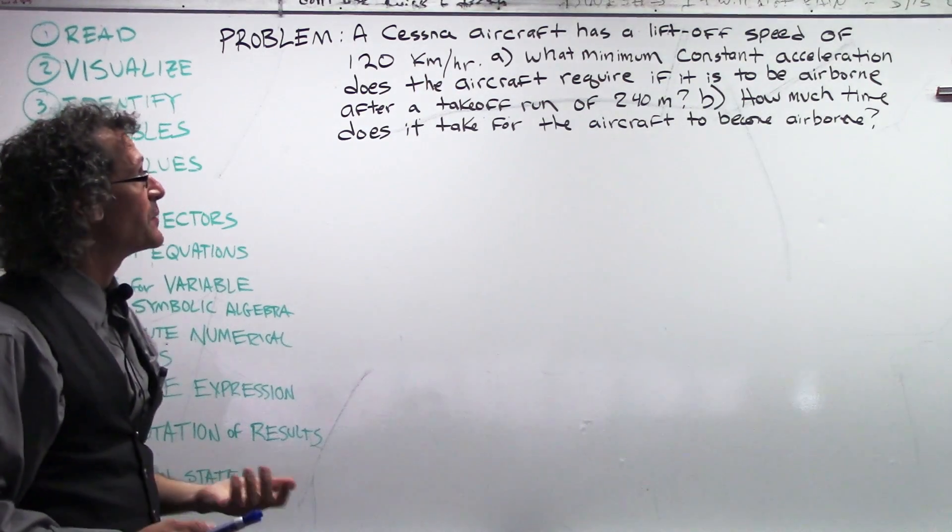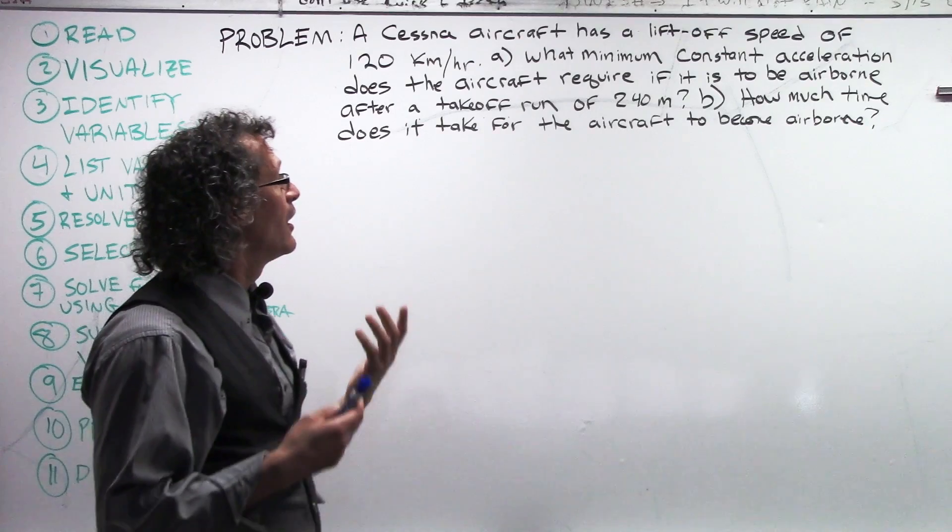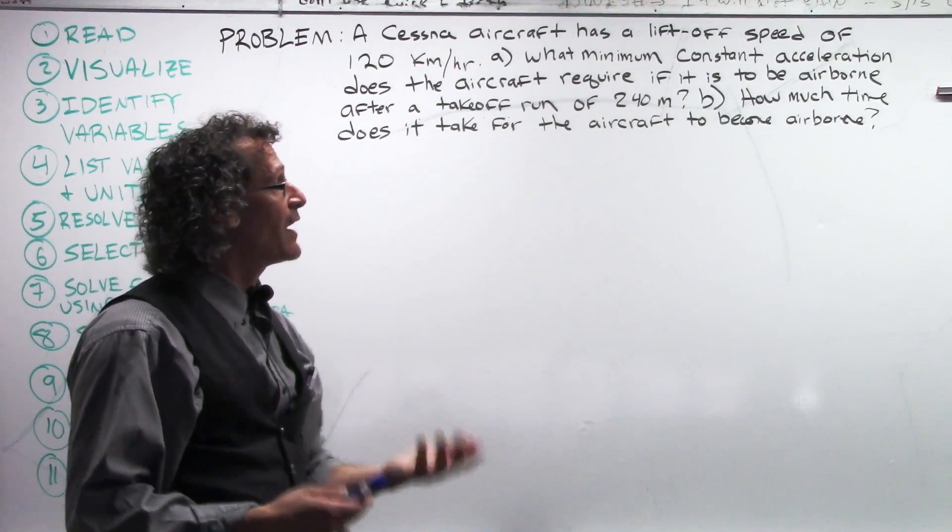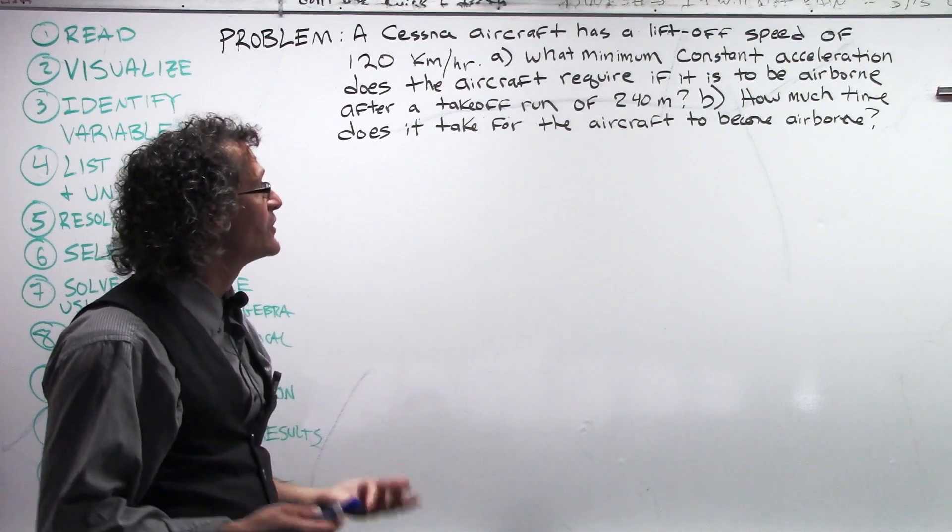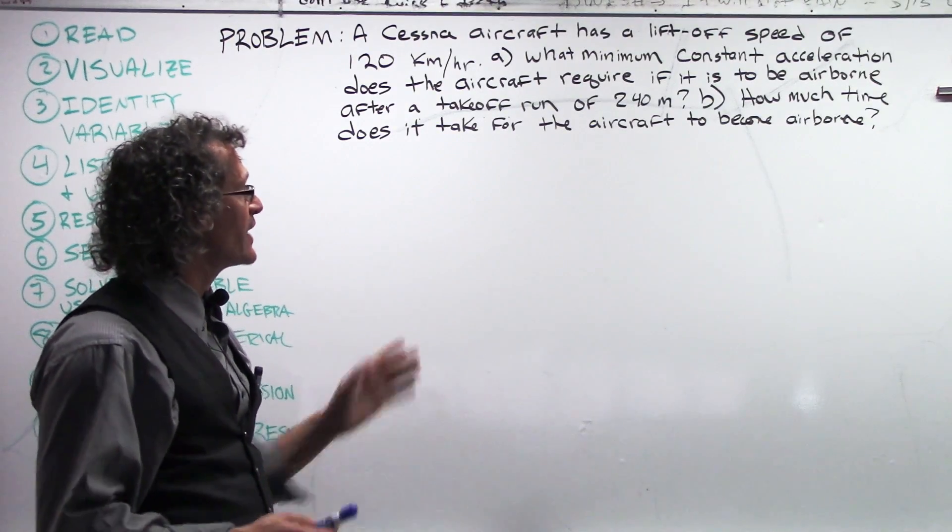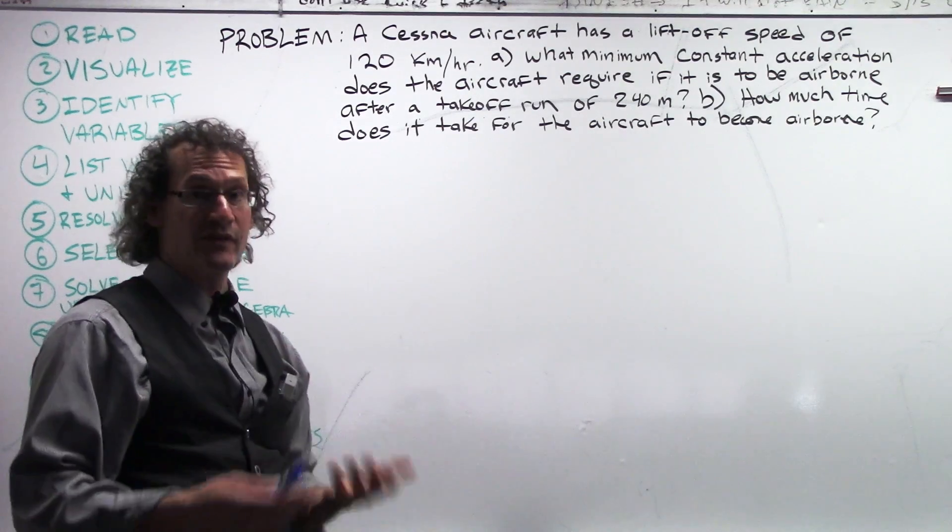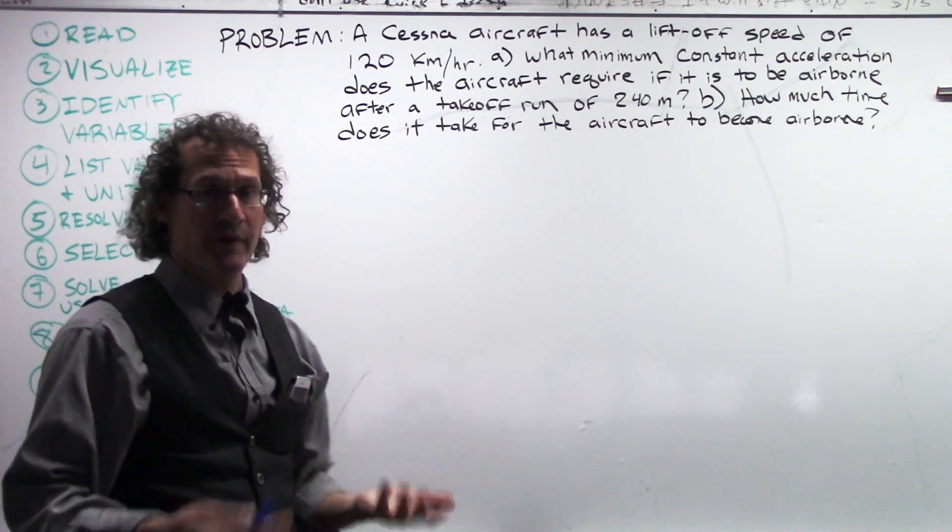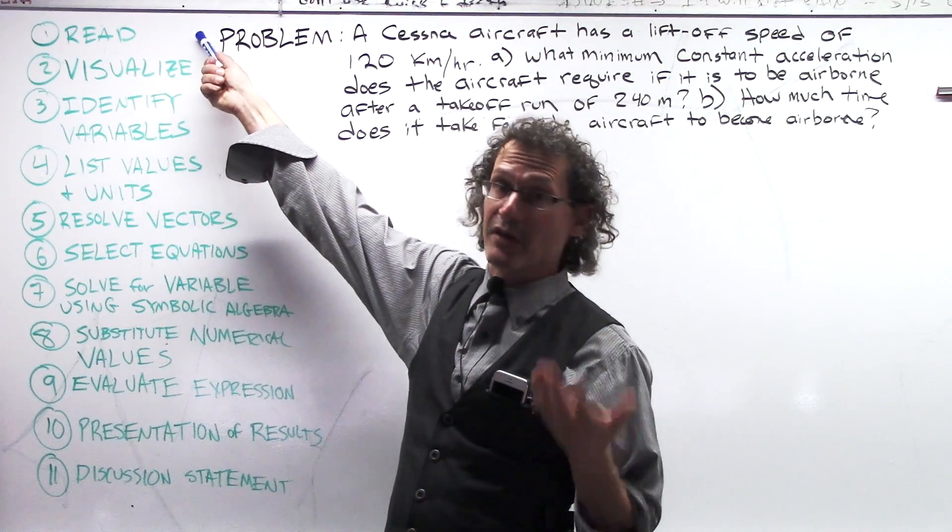We're going to do that here so you can check it out. Our problem is that a Cessna aircraft has a liftoff speed of 120 kilometers per hour. Part A, what minimum constant acceleration does the aircraft require if it is to be airborne after a takeoff run of 240 meters? How much time does it take for the aircraft to become airborne? Our first step is, as just done, to read the problem, to then identify some keywords.